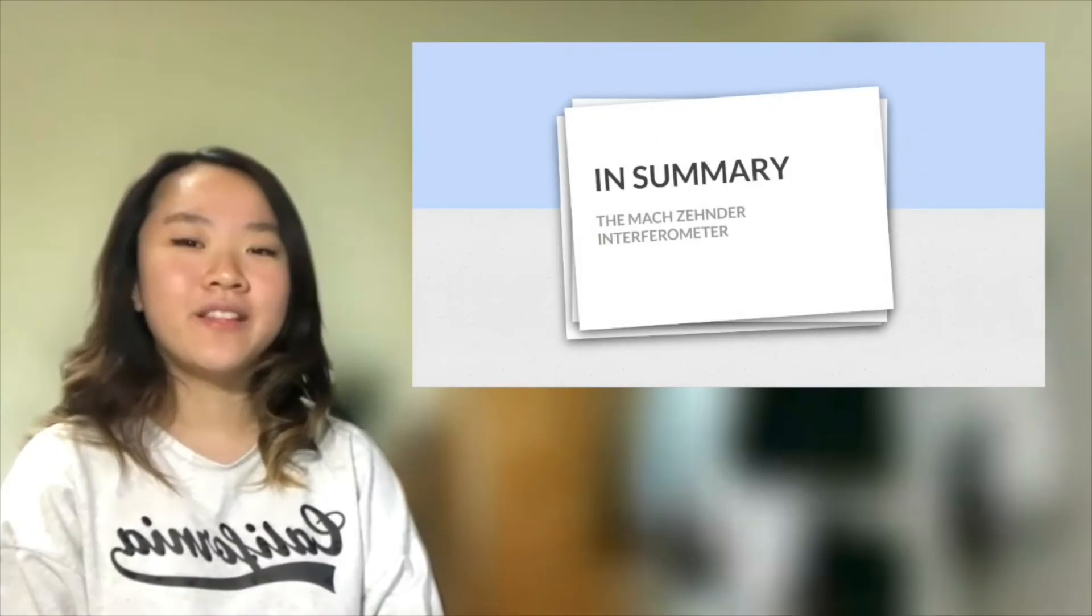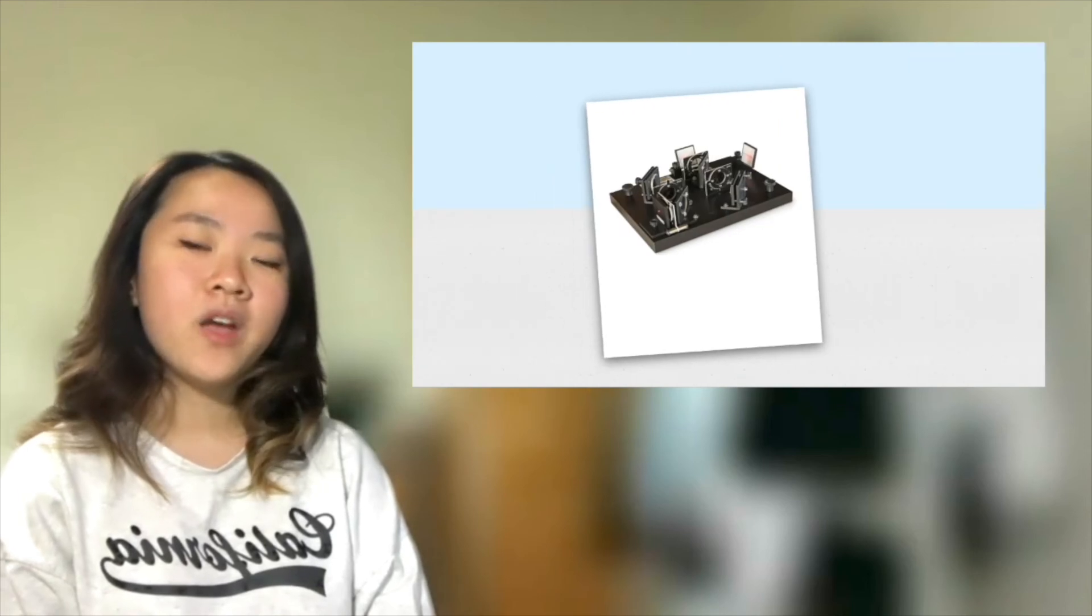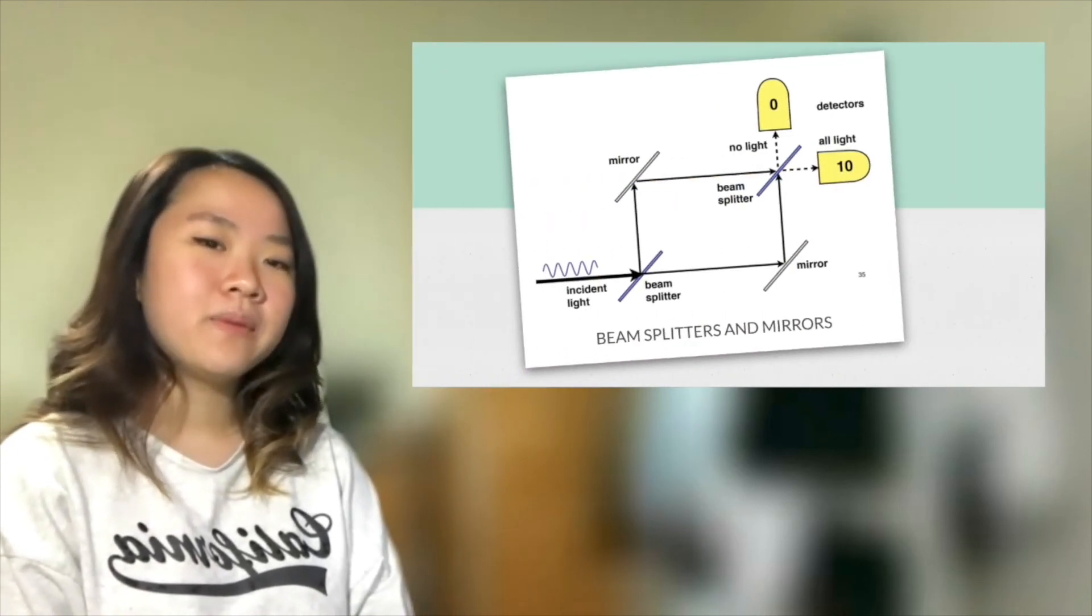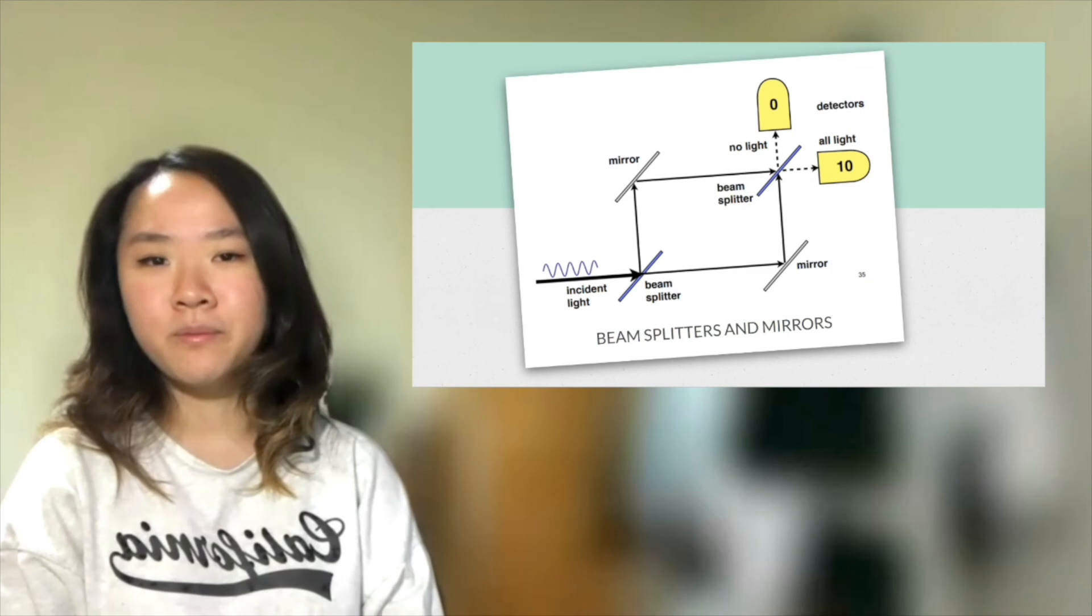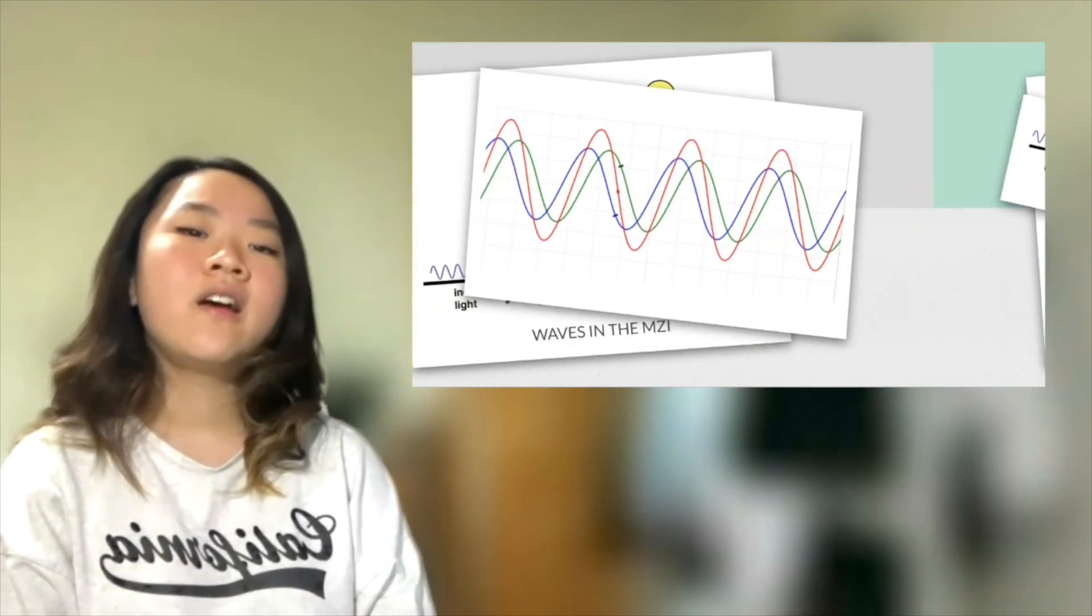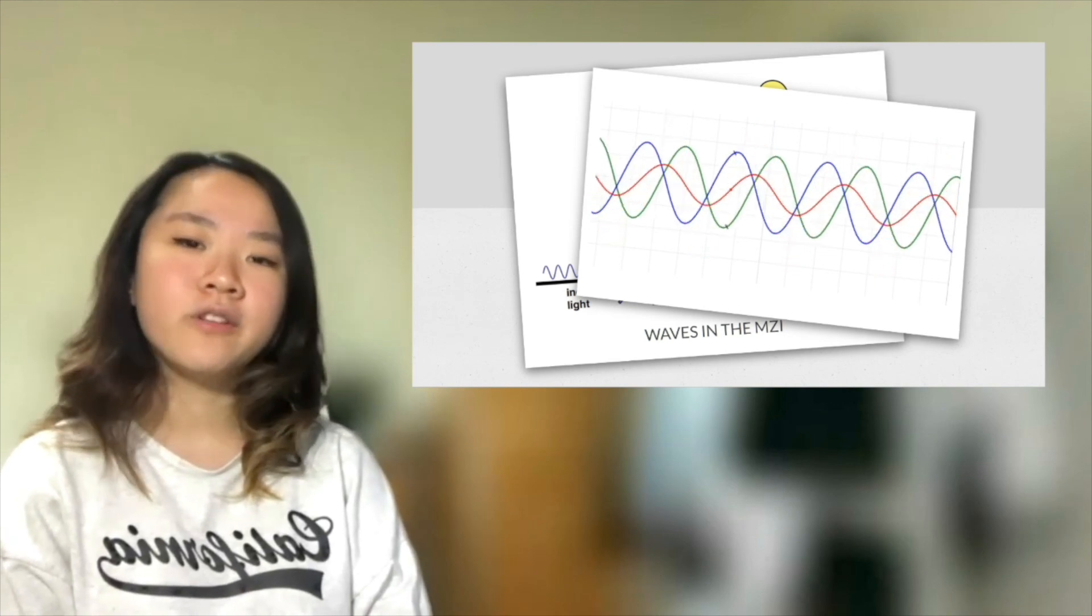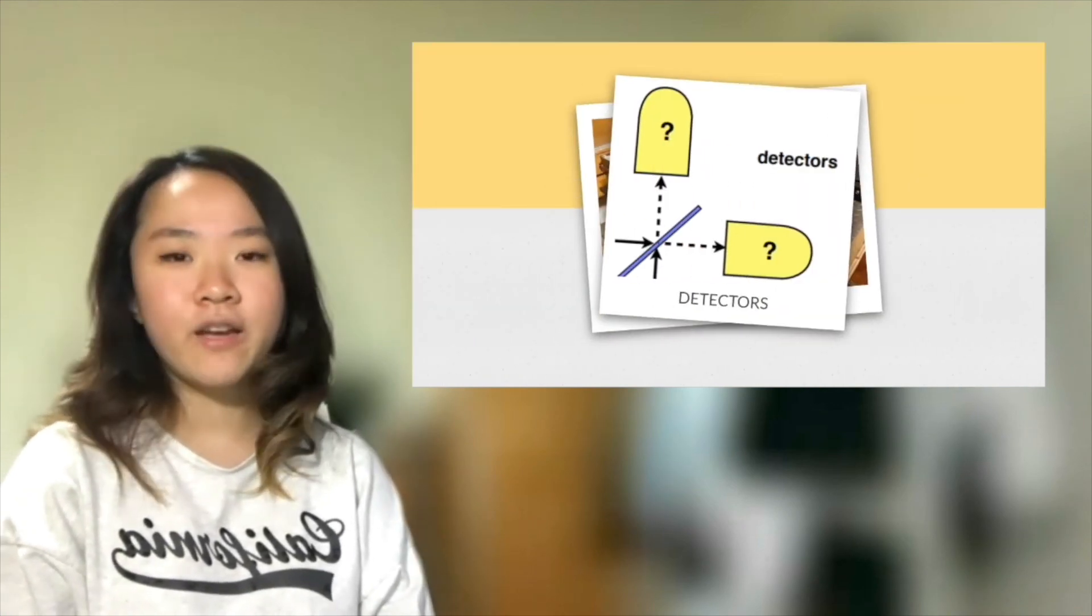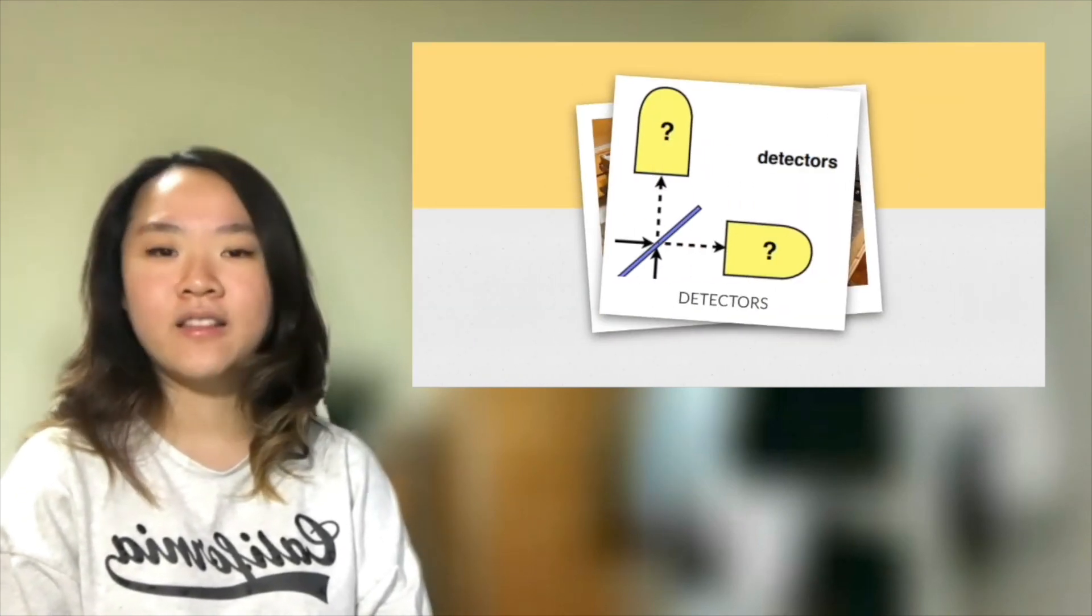So to recap, in this video, we've talked about the history of the Mach-Zehnder interferometer, what it's made of, how waves interfere, how incident beams of light react to mirrors and beam splitters, including how a beam splitter can induce a phase shift to the wave it reflects, how the waves interact as they go through the interferometer, and finally, what happens once they arrive at the detectors.